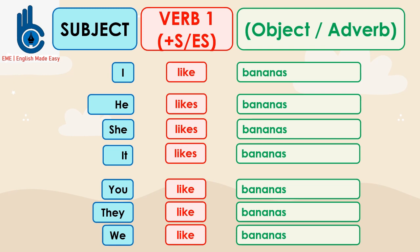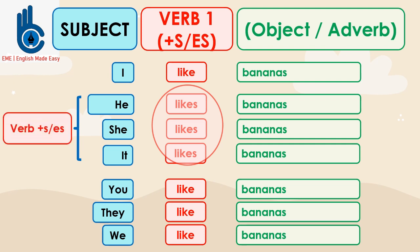Do you see the differences between all of these sentences? For subject he, she, and it, the three of them put S after the verb. So, special for subject he, she, it, we use S or ES after verb one.